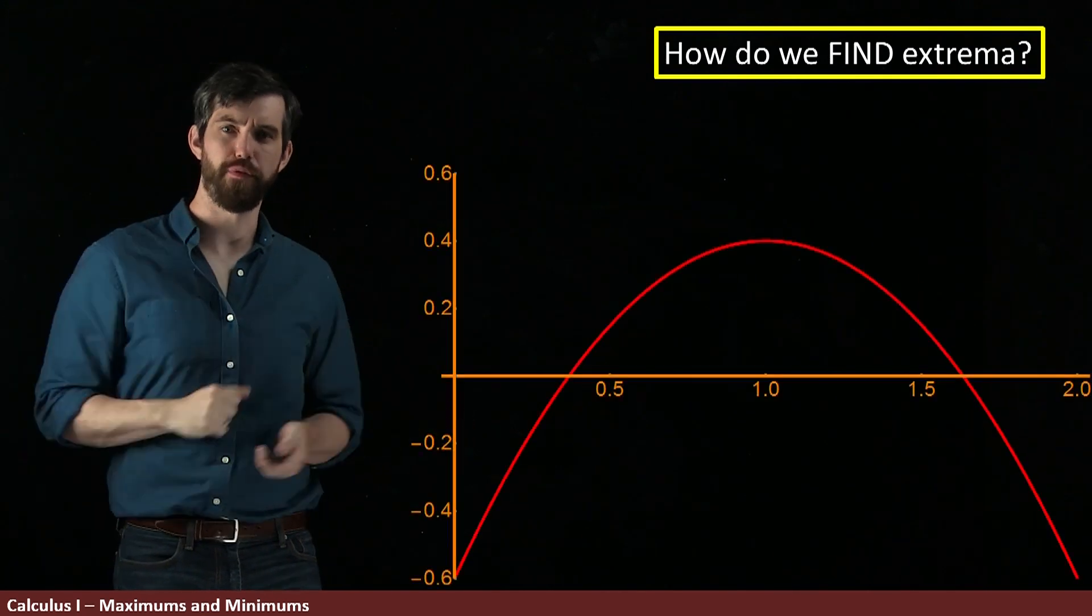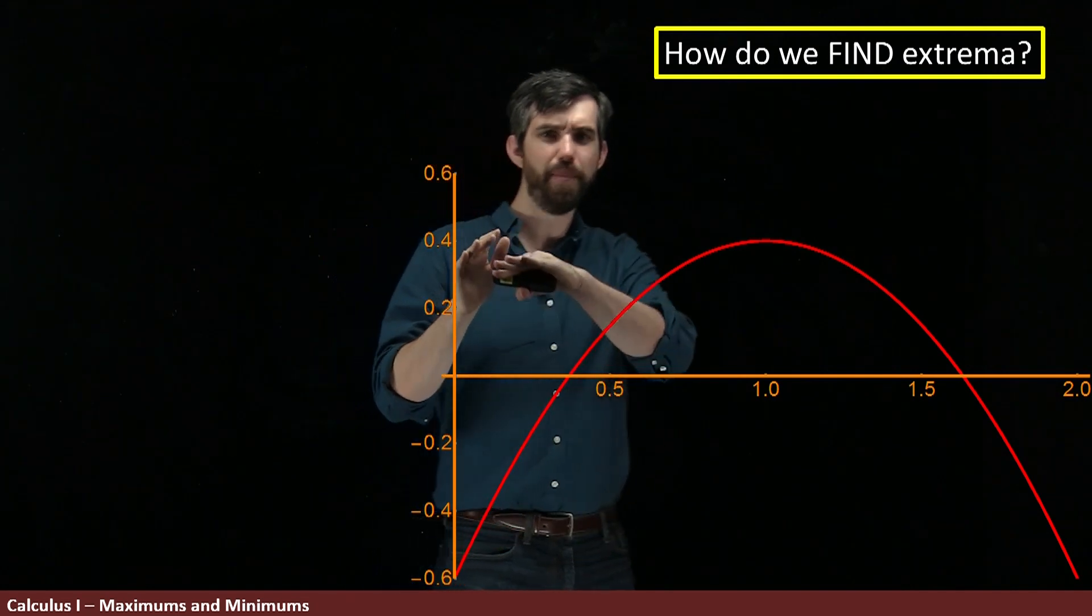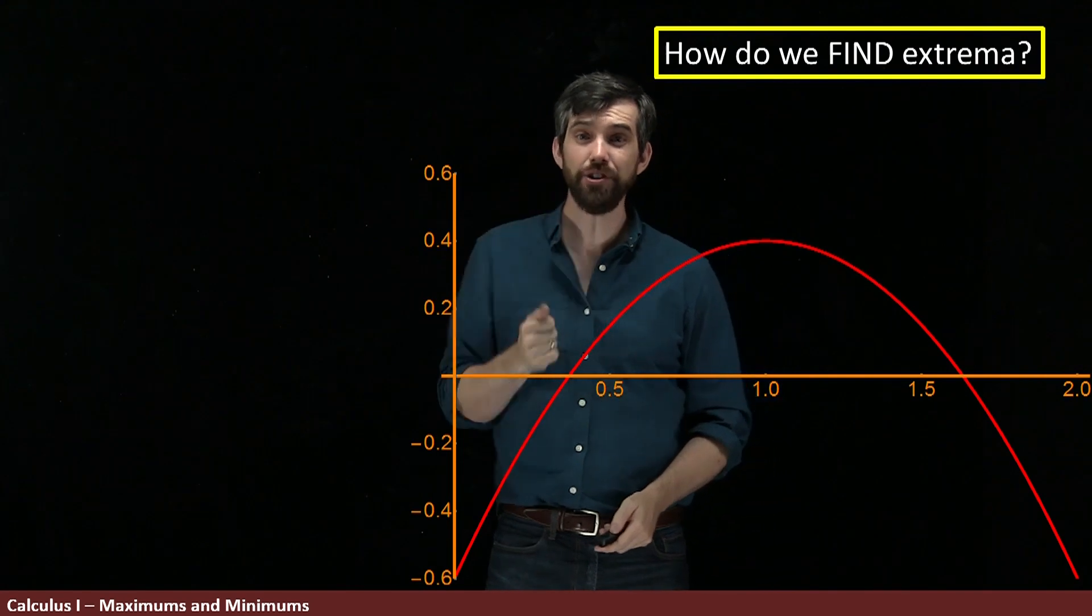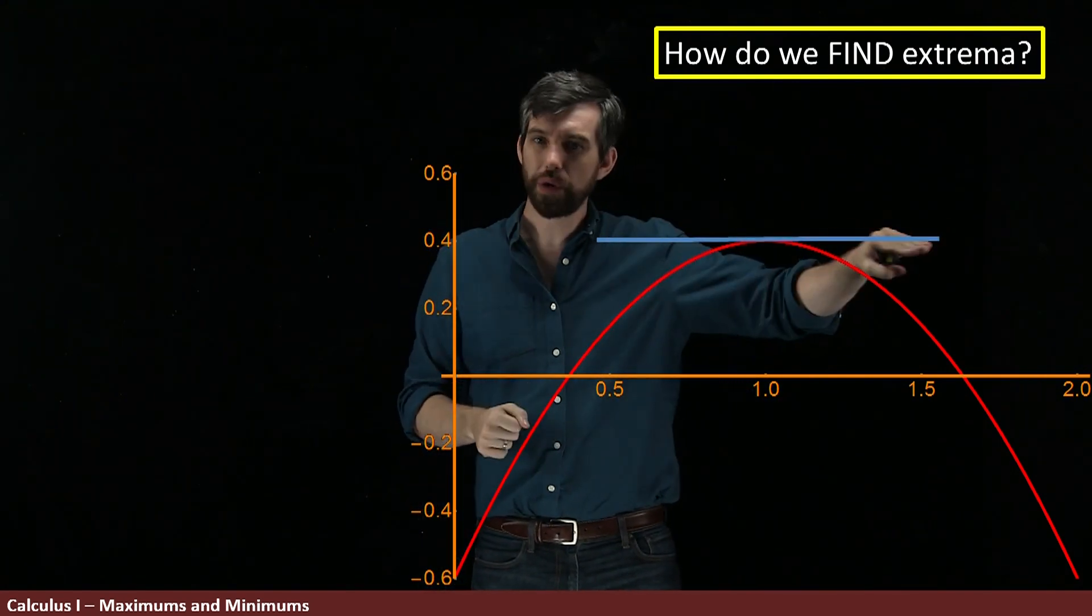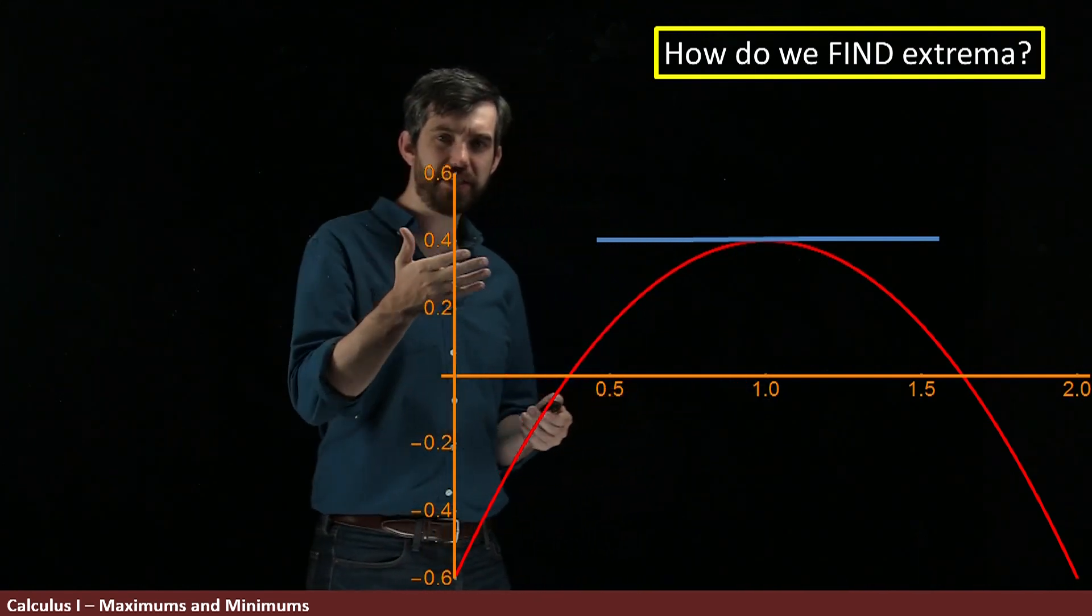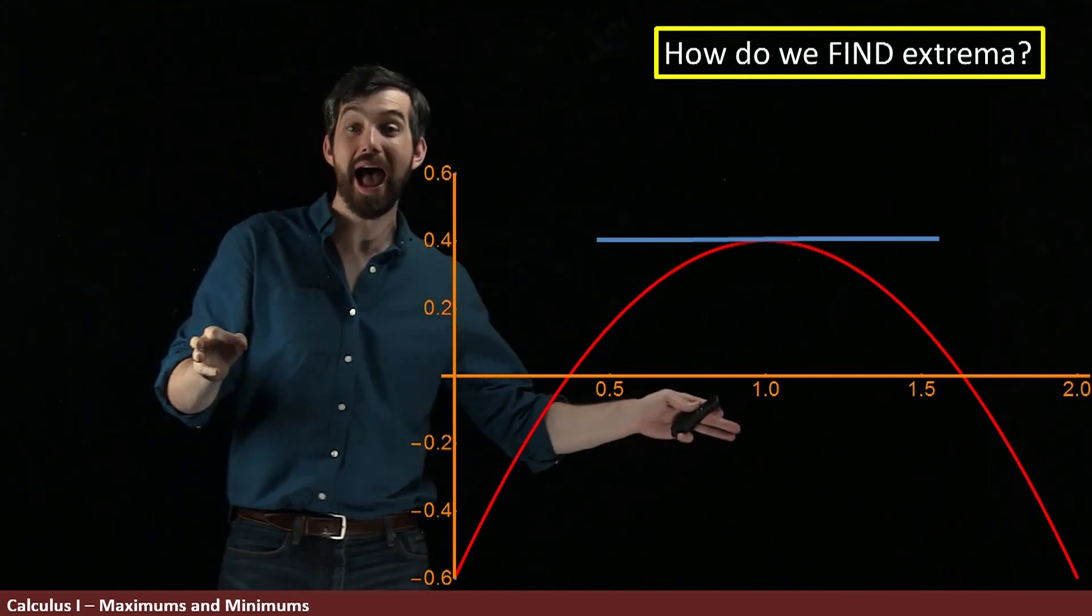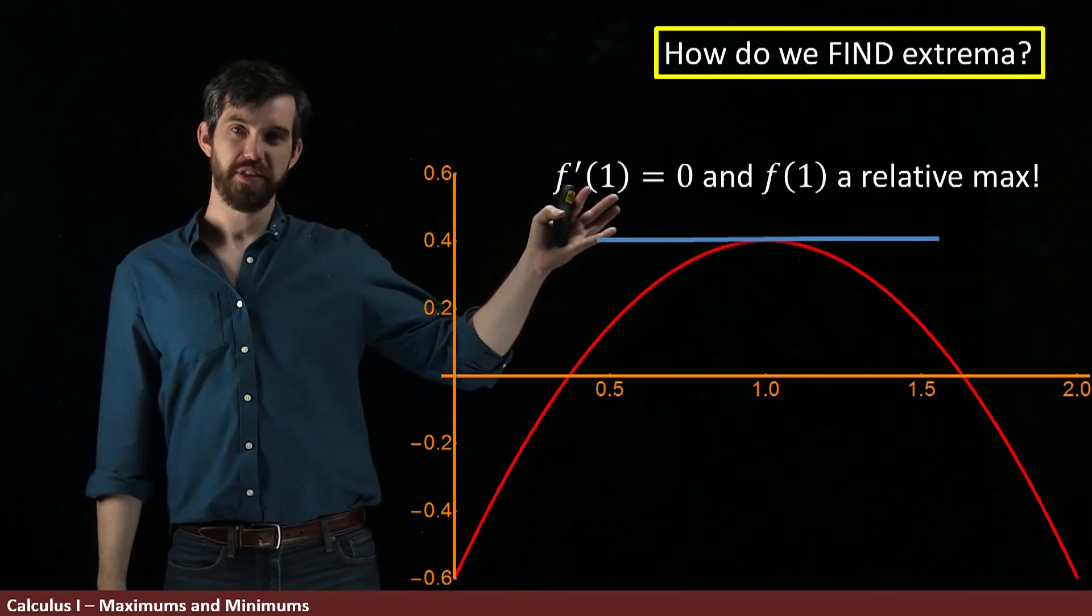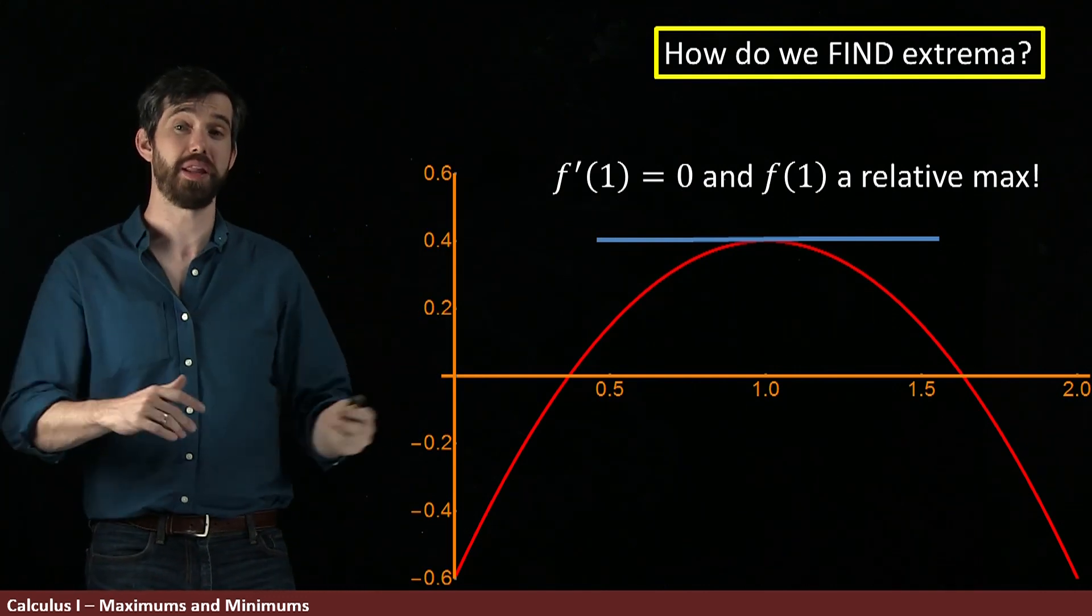Let's go back to that parabola that we saw before. I want to notice something about the maximum that we have here. If I look at this maximum and I put its tangent line on here, its tangent line looks like it's completely horizontal at that particular maximum point. That is, this horizontal tangent line means that the derivative at this particular point one is going to be equal to zero. So the derivative at this one is zero and f of one is going to be a relative maximum.